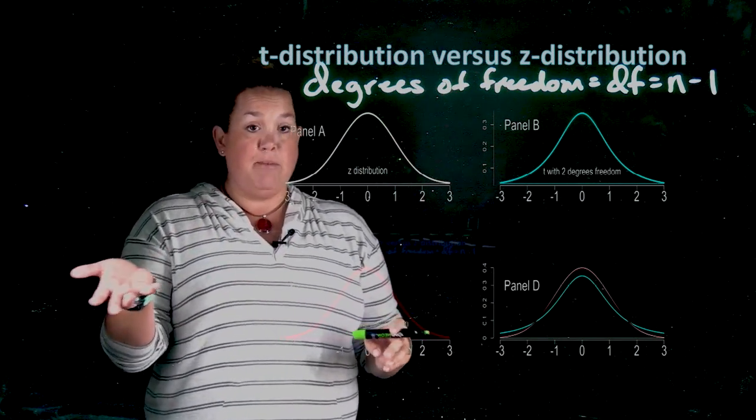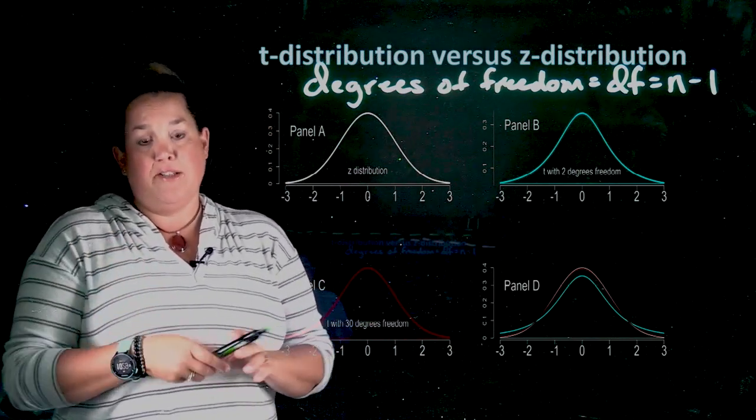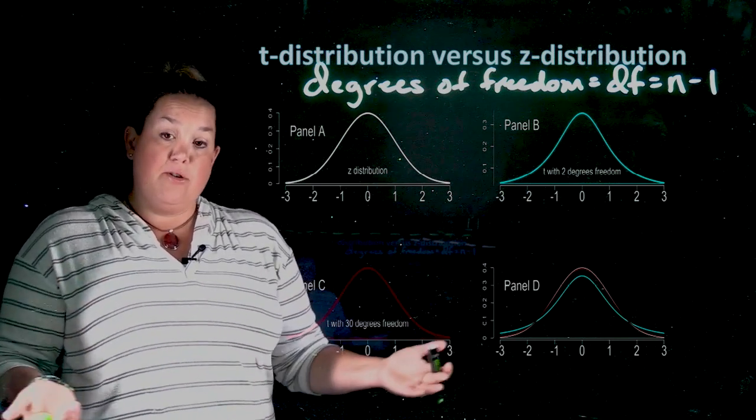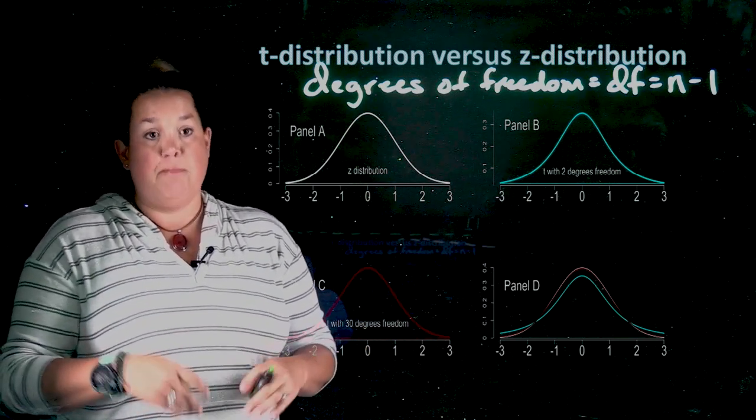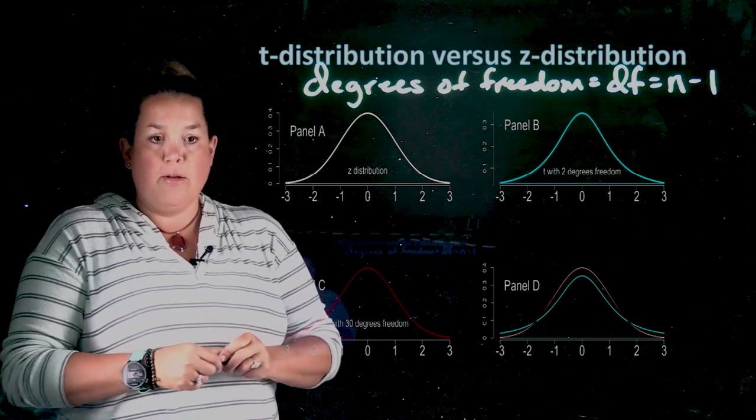So very closely related to degrees of freedom is how sample size is changing. So if the sample size goes up, degrees of freedom goes up. If sample size goes down, degrees of freedom would be smaller. So they're directly related to one another.